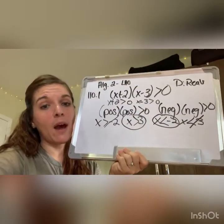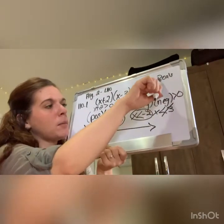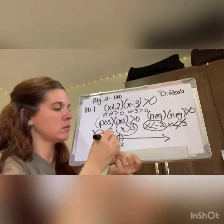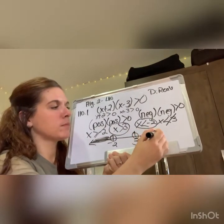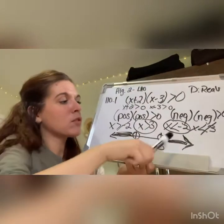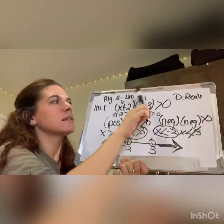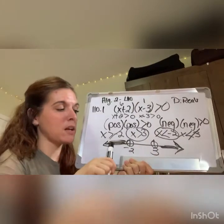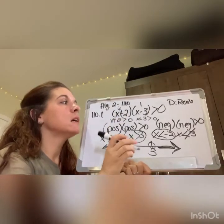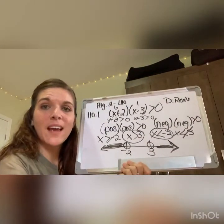Now graph the solution on the number line. Draw your number line — these values are not included, so use open circles. You have x < -2 and x > 3. Let's verify: try x = 4: (4 + 2)(4 - 3) = 6 × 1 = 6, which is greater than 0. Try x = -3: (-3 + 2)(-3 - 3) = (-1)(-6) = 6, which is also greater than 0.